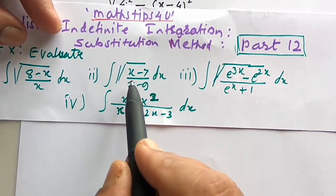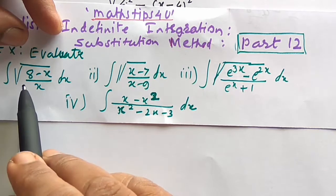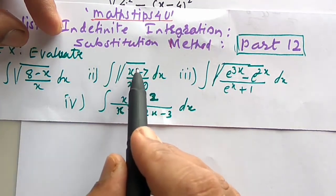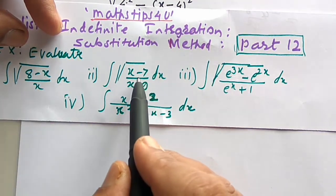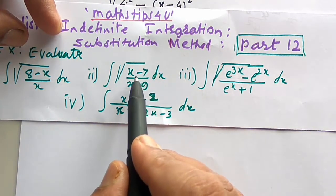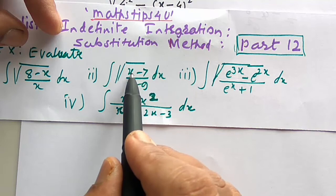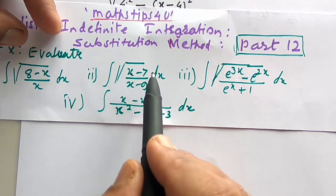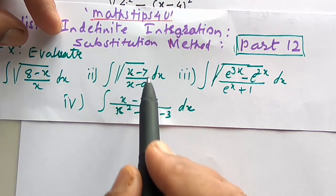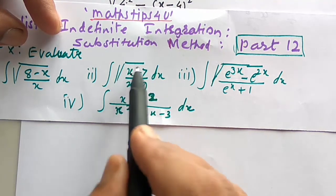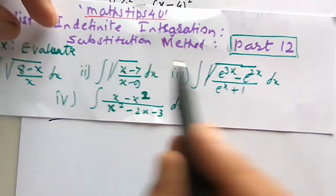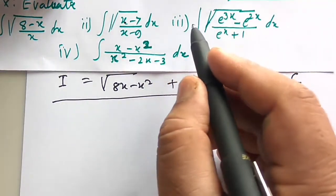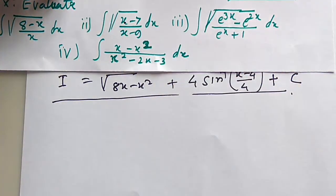Example number 2 is similar to example 1. Here you multiply (x−7) in both the numerator and denominator inside the square root sign and proceed on the same lines.